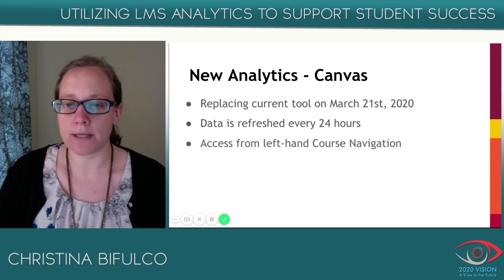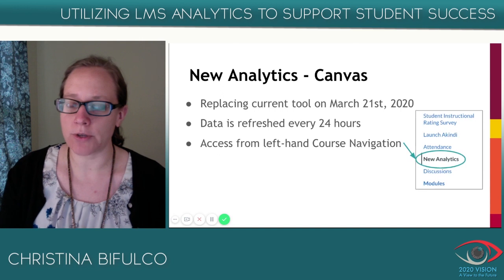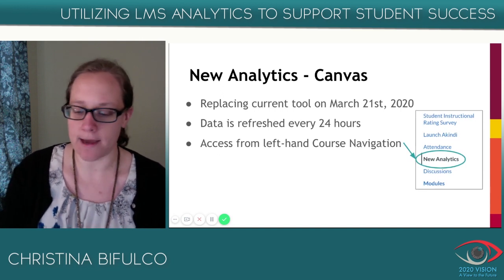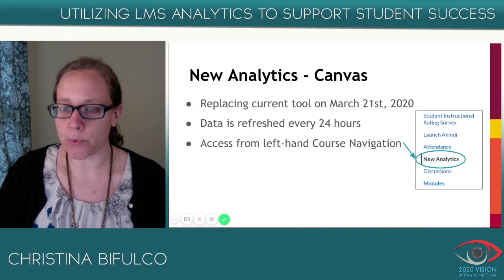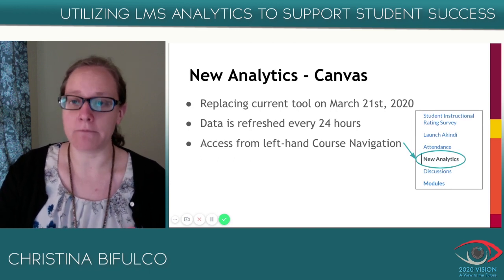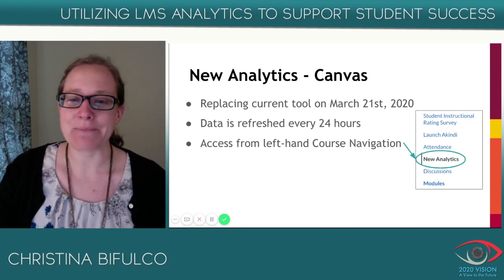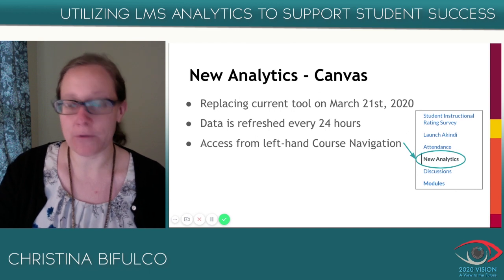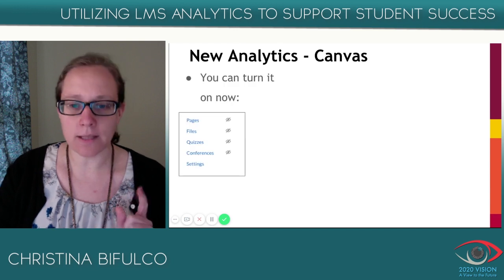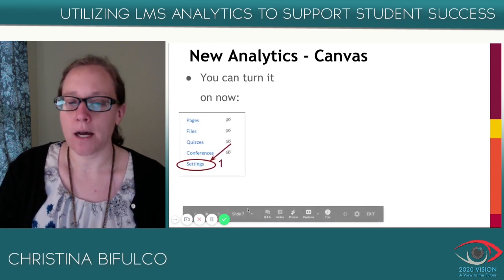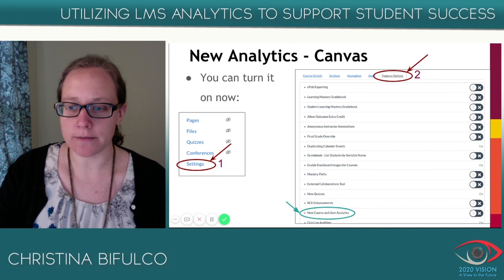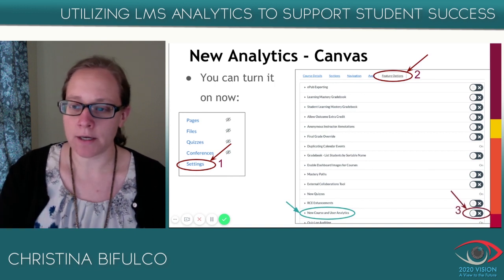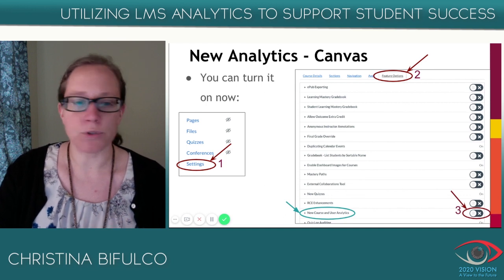You can get to New Analytics from the left-hand course navigation — you should see New Analytics listed there. From what I understand, it should be getting pushed out to all Canvas courses at this point. However, if you don't see the New Analytics link on the left-hand side, you can turn it on by going to Settings, clicking the tab for Feature Options, and then under Feature Options you'll see New Course and User Analytics. Toggle it on so it shows green, and that will turn on New Analytics.